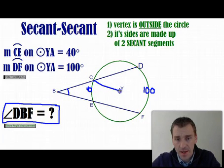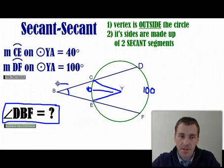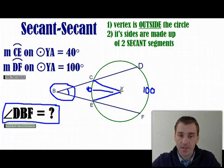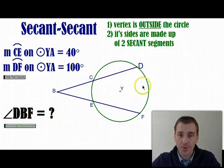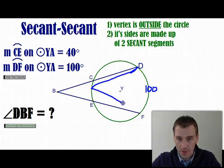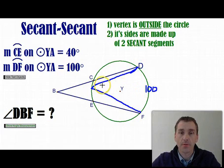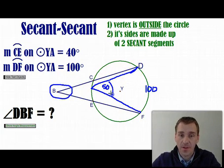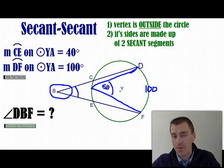As a recap, if this were a central angle, it would equal the arc — so that would be 40. But this vertex is outside the circle, so this angle has to be less than 50. If you drew an inscribed angle intercepting the 100-degree arc, that inscribed angle would be 50. This outside angle is more stretched out, so it must be less than 50. Let's find the exact answer.